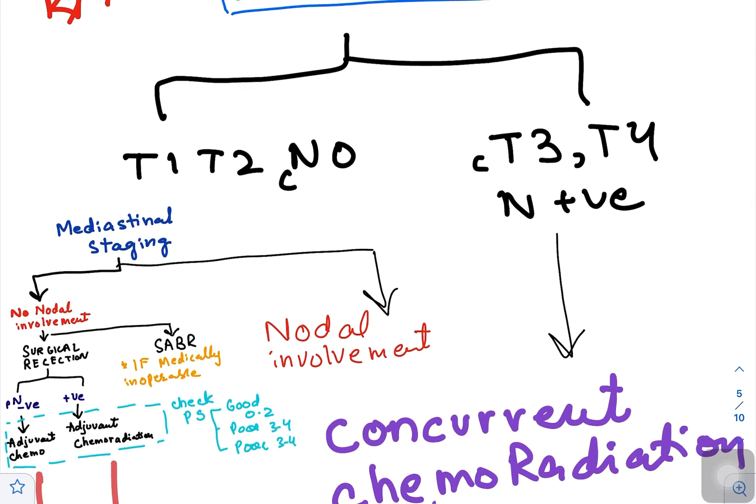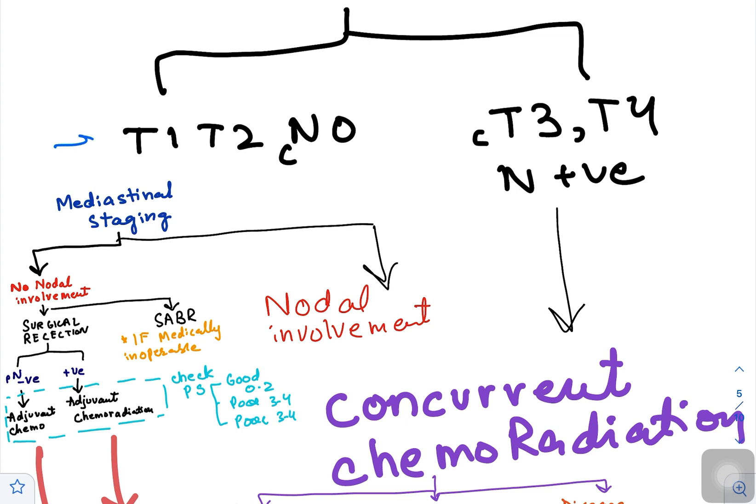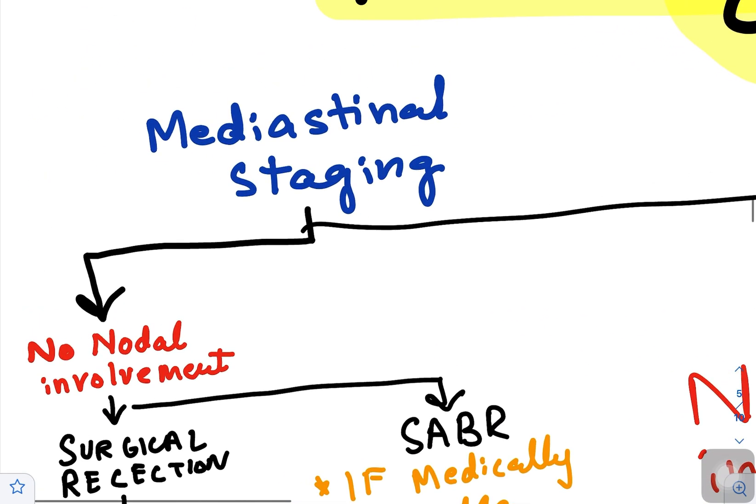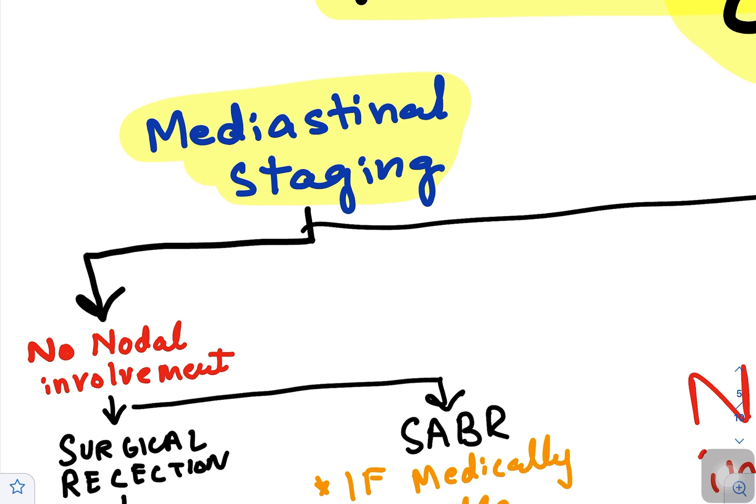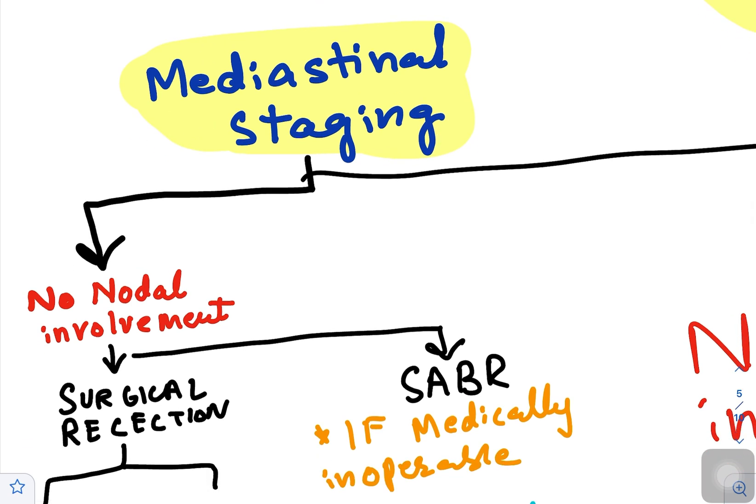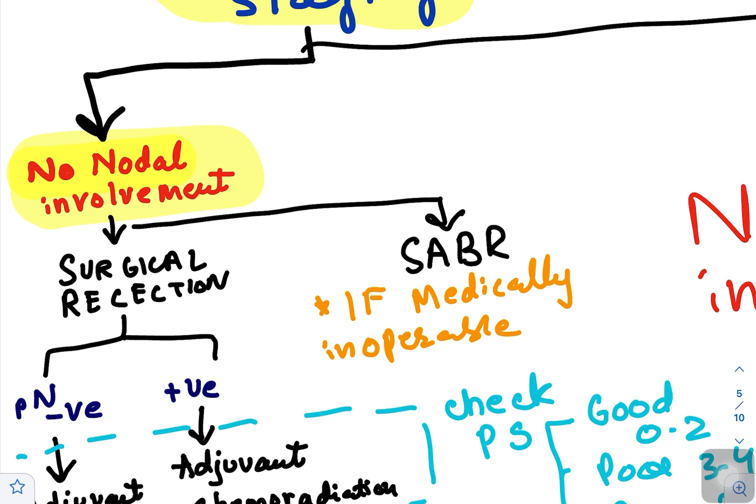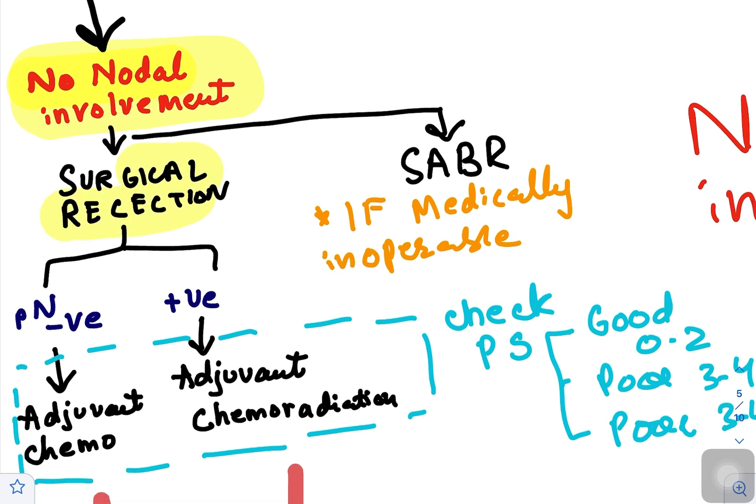In limited disease, you have to find out the staging. If clinically there is no nodal involvement and the size is T1-T2, then the next step is mediastinal staging. If mediastinal staging shows no nodal involvement, send patient for surgical resection.